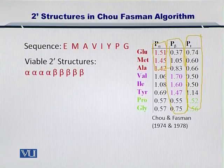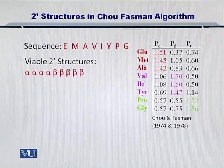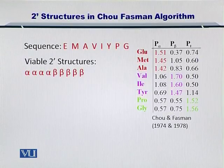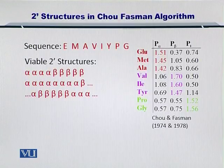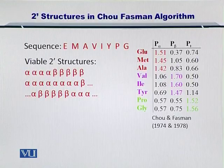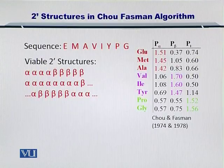Given that each amino acid can form a beta sheet, a turn, or an alpha helix, but with a different propensity, we may need to see what propensity will apply for a specific amino acid given that its neighbors have certain other propensities. For that, you need to construct multiple viable secondary structure conformations. One sequence can give rise to multiple secondary structure conformations — so which one do we choose? We can compute the overall propensity for each one of these secondary structure candidates.